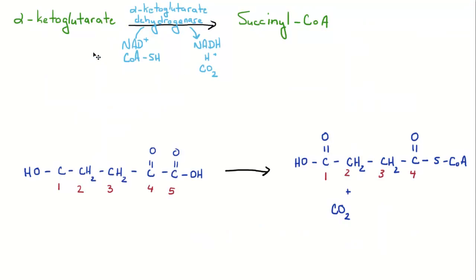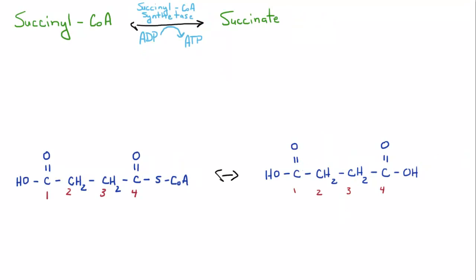Alpha-ketoglutarate is going to be oxidized into a molecule called succinyl coenzyme A. It's also going to kick off another carbon dioxide in the process. This is done by the enzyme alpha-ketoglutarate dehydrogenase. So you're going to have this carboxylic acid group right here kicked off. It's going to attach the coenzyme A, and in the process it's going to reduce NAD to NADH.